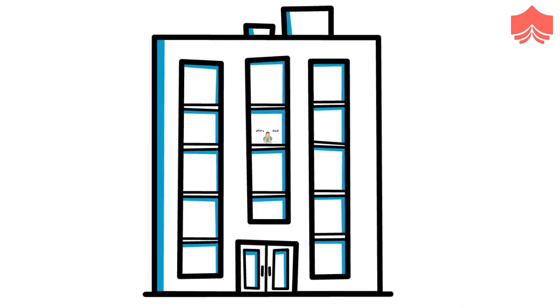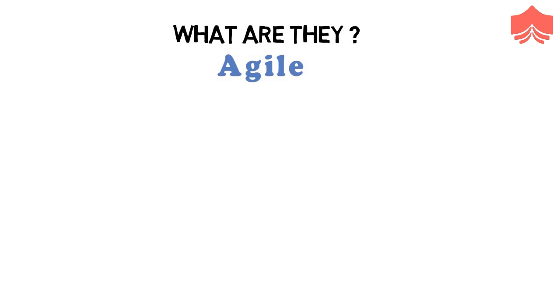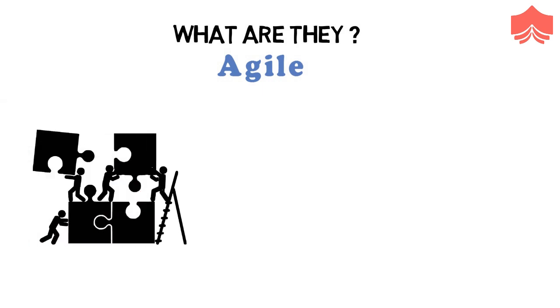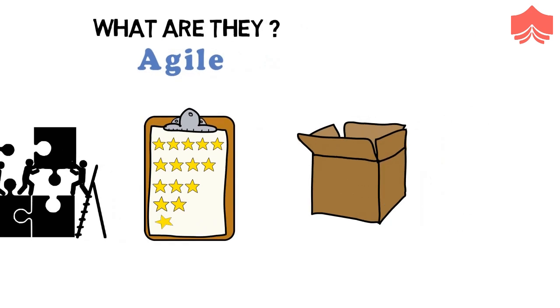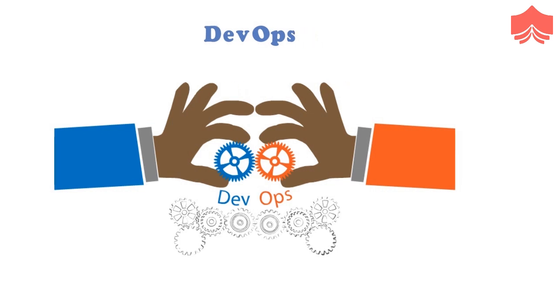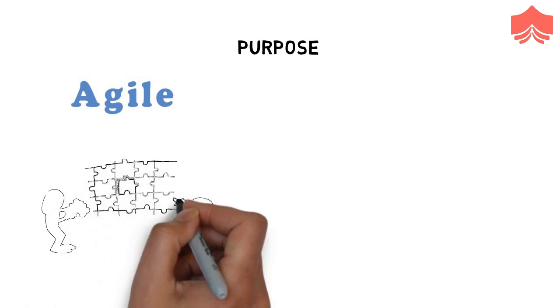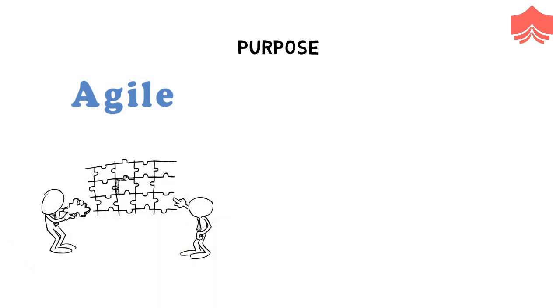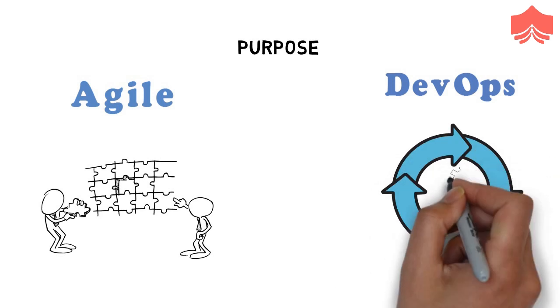First, what are they? While Agile refers to an iterative approach which focuses on collaboration, customer feedback, and small, rapid releases, DevOps is considered a practice of bringing development and operations teams together. What are their purpose? While Agile helps to manage complex projects, DevOps' central concept is to manage end-to-end engineering processes.